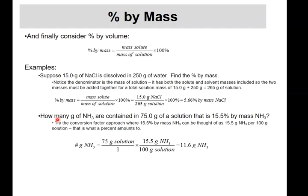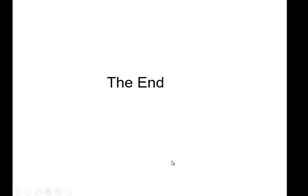How many grams of ammonia are in 75 grams of a 15.5% by mass ammonia solution? Again, save the percent as a conversion factor: 15.5 grams of ammonia per 100 grams of solution. Start with 75 grams of solution, multiply by that factor — grams of solution cancel — and you get 11.6 grams of ammonia. We're not trying to make you world experts at solution concentrations, but it's good to have a concept of how these work.